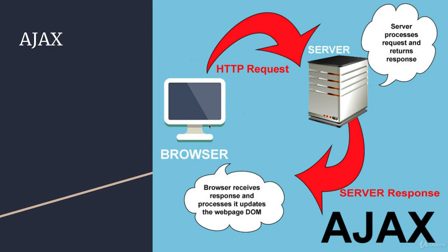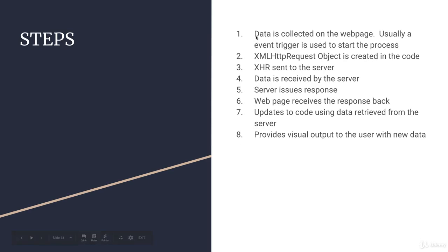Within an Ajax request: the user interacts with the browser and triggers something in the JavaScript that sends an HTTP request. The server receives that request, processes it, and returns a response. The browser receives that response, processes it, and updates something within the web page. To summarize, there are eight steps: data collection on the website, a trigger that starts the Ajax process, the XMLHTTPRequest object is created, the XHR is sent to the server, data is received by the server, the server issues a response, the web page receives the response and updates using the retrieved data, and finally provides a visual output for the user.